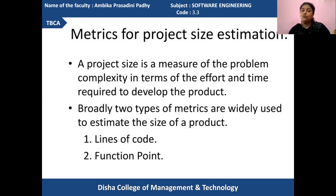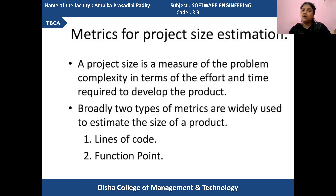One is identifying the lines of code, and the other is the function point metric to be used for size estimation. For project size estimations, you can know what is the size required for writing the source code. For writing the source code, the size required you can note down in the lines of code technique.